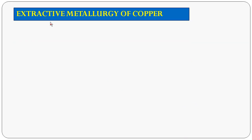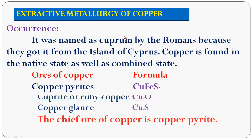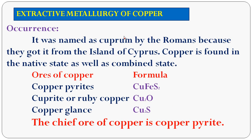Now we talk about the second metal, which is copper. Copper has the symbol Cu, atomic number 29, and the electronic configuration 2, 8, 18, 1. Copper has two valencies: 1 and 2.